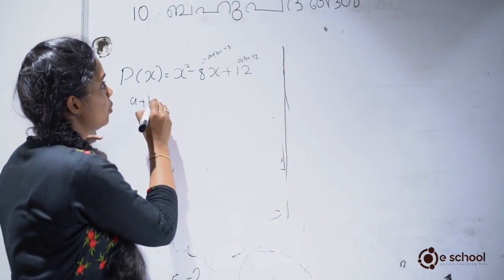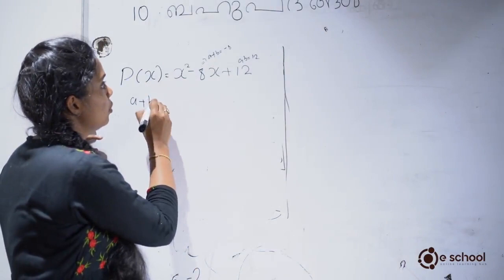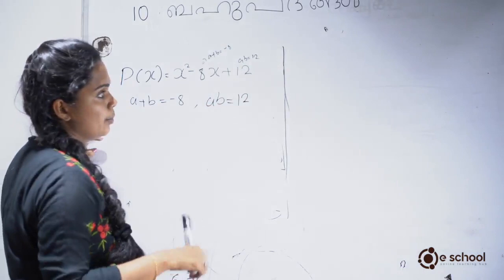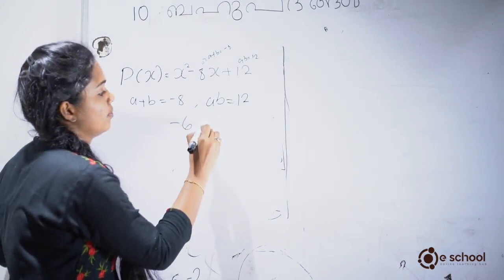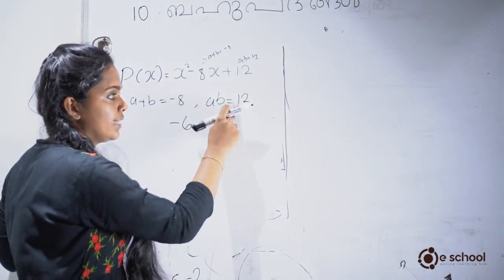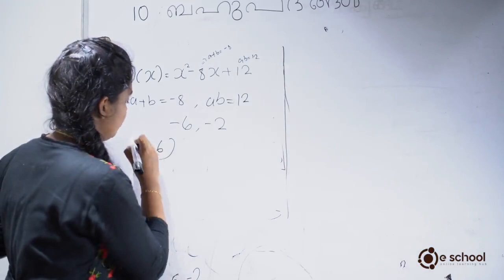Let's see: a plus b equals minus 8 and ab equals 12. So we have numbers minus 8 and 12. The pair is minus 6 and minus 2, since minus 6 plus minus 2 equals minus 8. So we draw x minus 6 into x minus 2.